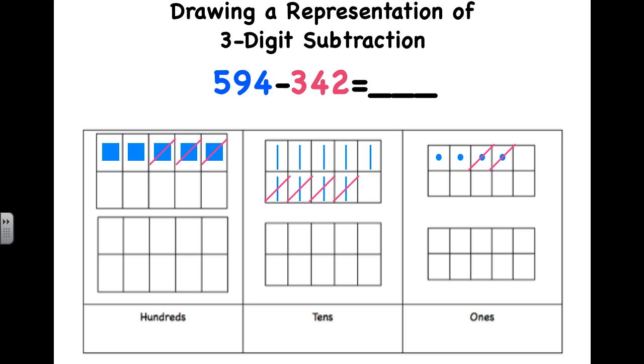So, again, just like the number of base ten blocks that we've taken away should equal 342, the number that we have crossed out on our drawing should also equal 342. So, my pink slash marks, I have crossed out three hundreds, four tens, and two ones. So, I know I've taken away the correct amount.